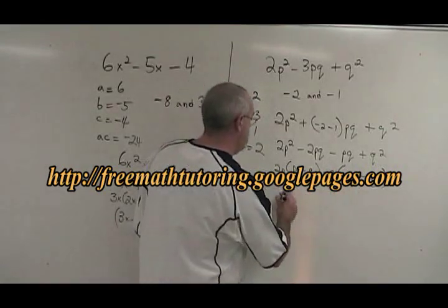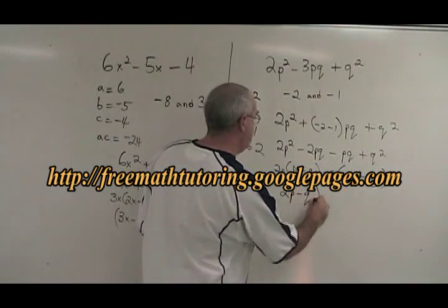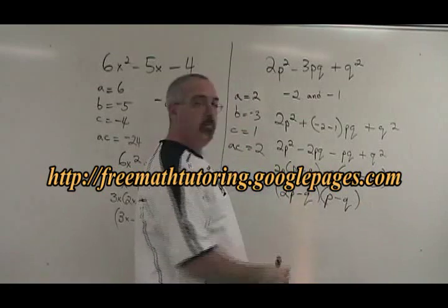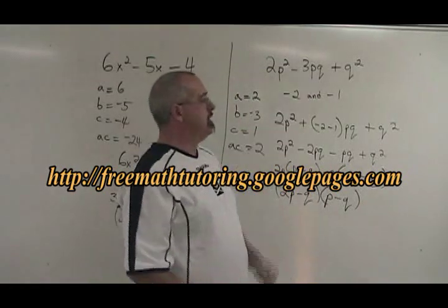We just have to write our answer now: 2p minus q in the first bracket, and p minus q in the second bracket. When multiplied together, we'll give your original question.